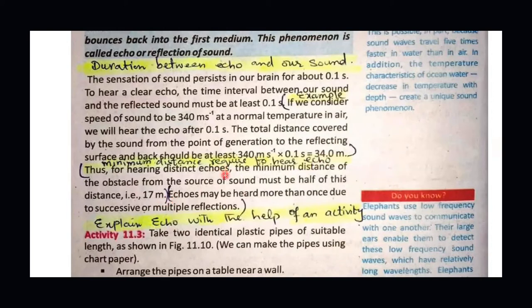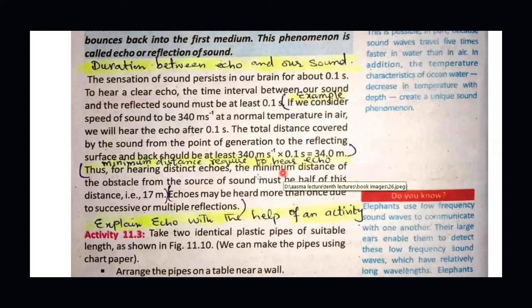Inside houses without curtains, you hear a lot of sound because there is nothing to absorb the sound. Our voice directly hits the walls and reflects back. But if there are soft furnishings that absorb sound, echo is not produced inside houses. In valleys, however, where there are mountains on four sides, you can experience multiple reflections of sound.